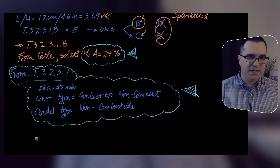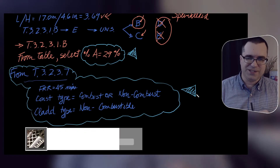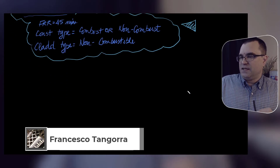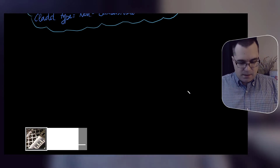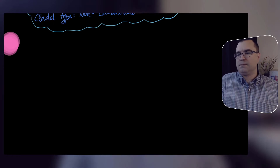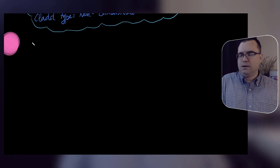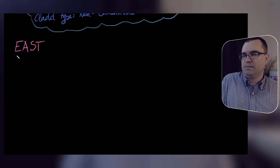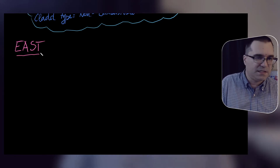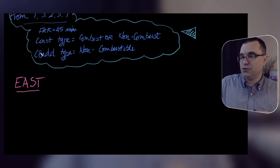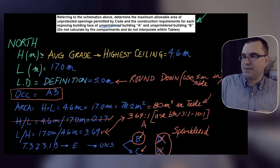Now let's do the east face and then we'll end this video. I'm just going to make a note for the east face right here. So we're now looking at the east face of building A. We have to figure out again the same properties that we used for the north face — I'm just going to bring them up and note them here.